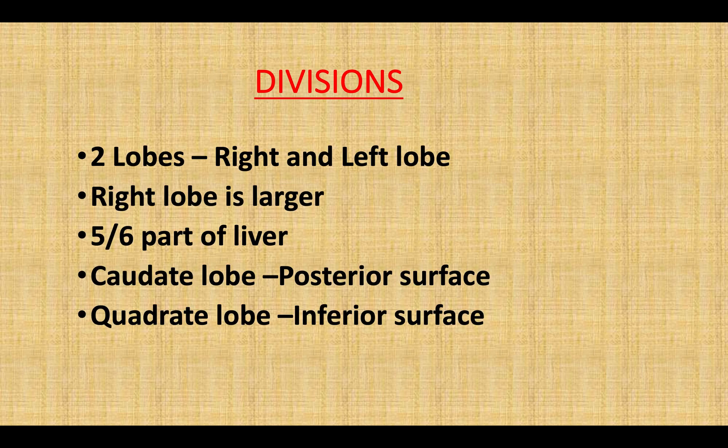Divisions: the liver has two lobes — right and left lobe. Both lobes are separated by a ligament known as the falciform ligament. The right lobe is larger than the left and covers five-sixths of the liver.